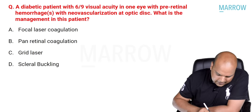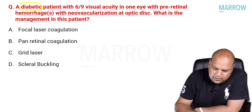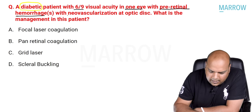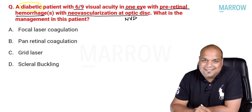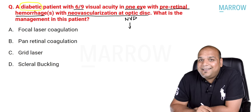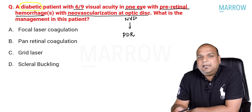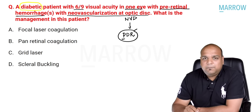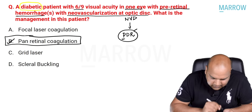As soon as we hear 'diabetic patient,' we think about diabetic retinopathy. The patient is given a visual acuity of 6/9 in one eye, with pre-retinal hemorrhage and neovascularization at the optic disc. Neovascularization means diabetic retinopathy is conveniently divided into only two stages — NPDR and PDR — and neovascularization is a sign of PDR. The question asks for management, which is essentially asking: what is the treatment for proliferative diabetic retinopathy?